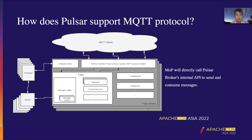According to this picture, we can understand how the protocol handler works. It will call Pulsar's internal API to support message store, publishing, and consuming. Native support enables MOP to achieve high performance and high availability like Pulsar. I will briefly introduce how MOP implements the publishing and receiving of MQTT messages through protocol handlers.